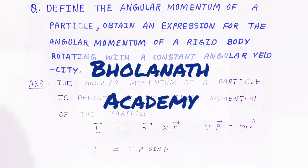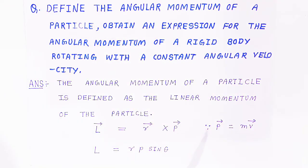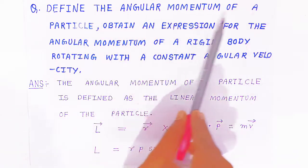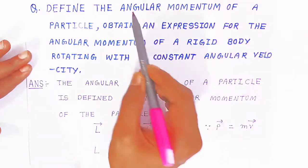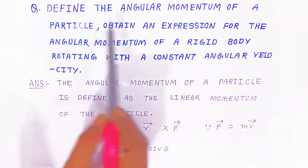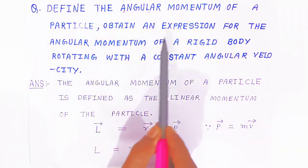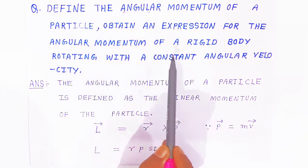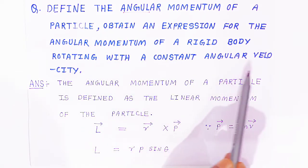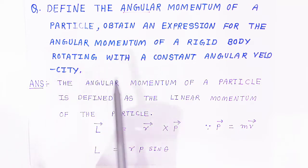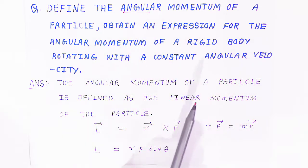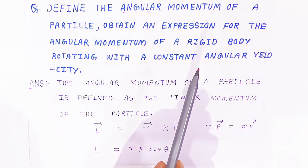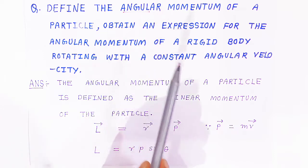Welcome to Volanath Academy. In rotational dynamics, we are going to define the angular momentum of a particle. Here the word angular is very important. We will also obtain an expression for the angular momentum of a rigid body rotating with constant angular velocity. Before we obtain the expression, we should first know what angular momentum is.